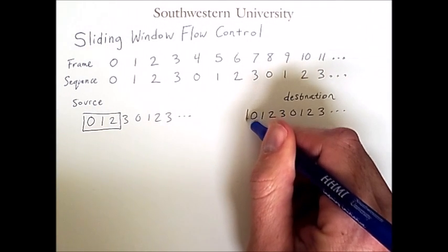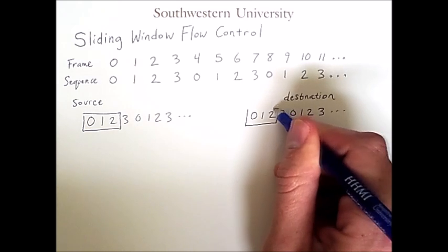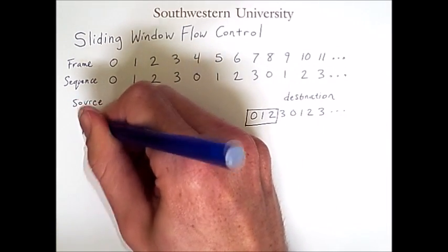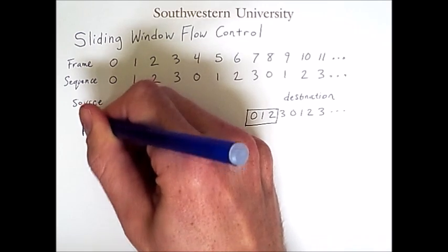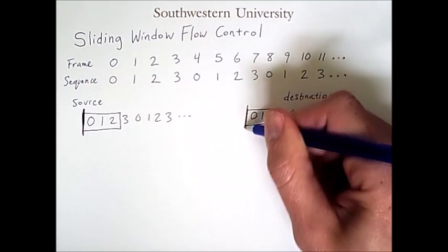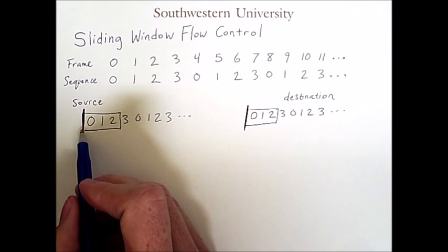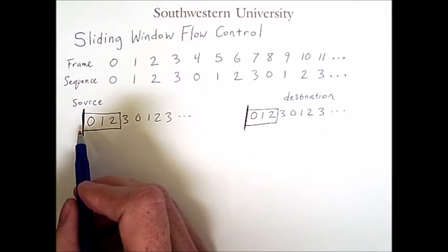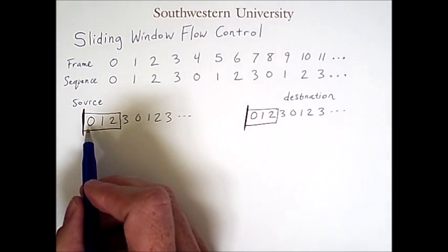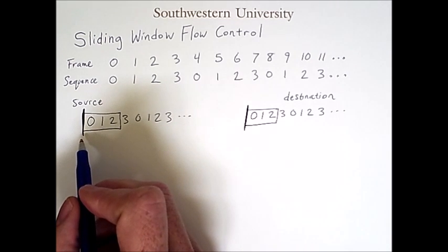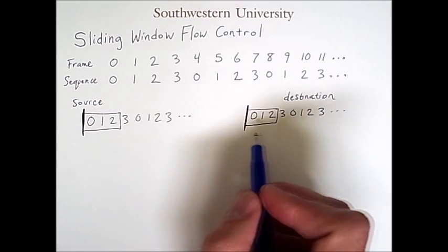The destination has a similar window. And I'm also going to draw a thick vertical bar here on both the source and destination sides. Now, every sequence number that ends up on the left-hand side of this vertical bar is one whose receipt has been acknowledged.